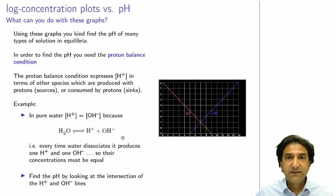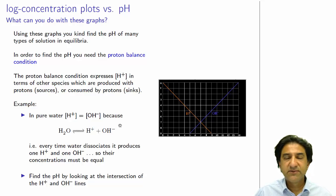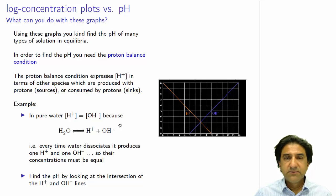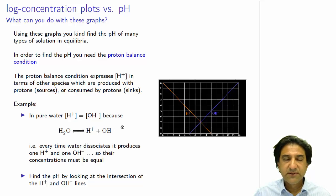Hi, welcome to Chemistry 3006. I'm going to talk about how we can use log concentration plots to predict the pH of a solution, just by looking at the graph and where certain lines intersect. That's the use for these log concentration plots. In order to predict the pH of the solution, you first have to be able to draw the concentration plots, which we've already explained how to do.